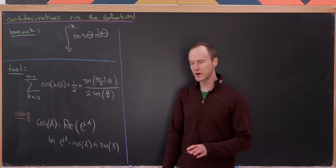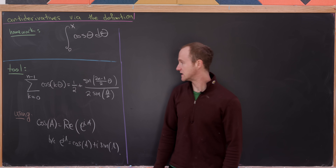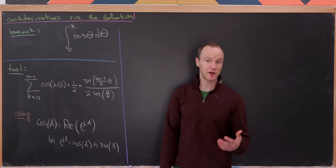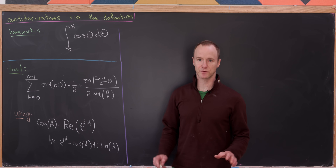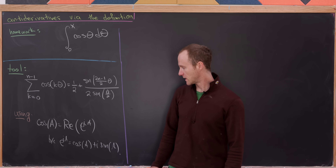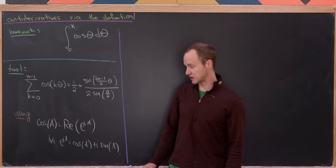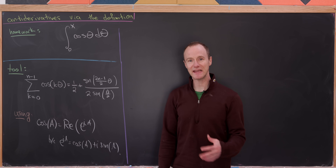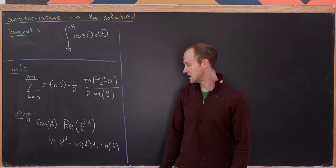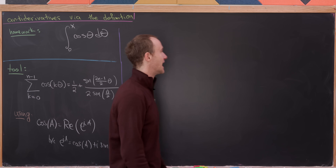Here we're going to use the fact that the cosine of a is equal to the real part of e^{ia}, where a is a real number. That's because we have the Euler expansion of the complex exponential, which says e^{ia} = cos(a) + i·sin(a).